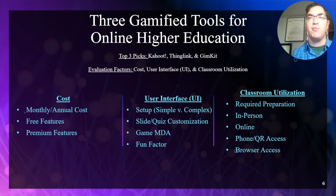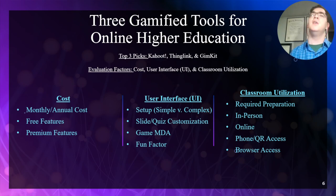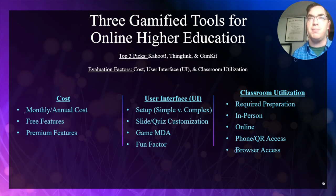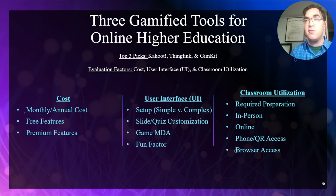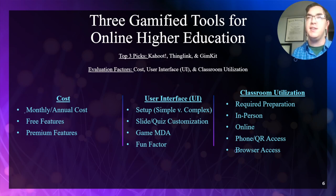My top three favorite website tools currently available to professionals in the higher education sector are Kahoot, ThingLink, and Gymkit. Three important aspects to consider are cost, user interface, and classroom design. Cost refers to the monthly or annually reoccurring fees, free features, and premium features. User interface determines how easy it is for students and educators to utilize the learning tool — a simple or complex setup, the customization options for presenting information on slides and facilitating quizzes, game mechanics, design and aesthetics, and whether or not it is fun. Classroom design refers to the logistics of implementing and utilizing the tool in an in-person or online learning environment.